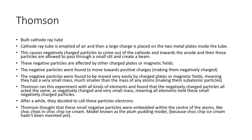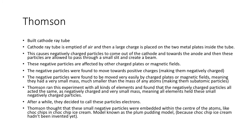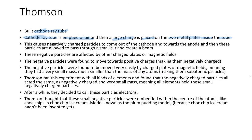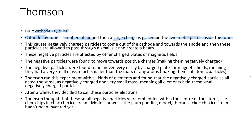Next was a scientist called Thomson, who built a cathode ray tube. A cathode ray tube is a tube of glass which was emptied of air, and then a large charge is placed on two metal plates inside that tube of glass. I haven't drawn the glass around it, but there'd be a big glass tube in there. You've got your very strongly negatively charged plate and very strongly positively charged plate — two charges placed on the metal plates inside the tube.